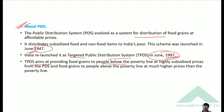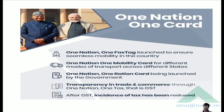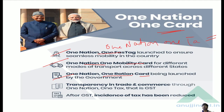This scheme is very important for UPSC, State PSC, RBI Grade B, and NABARD exams — questions can be asked from this topic in the ESI section. Apart from One Nation One Ration Card, there are other similar schemes like One Nation One Fast Tag, One Nation One Mobility Card, and One Nation One Tax — the last of which was implemented through GST.